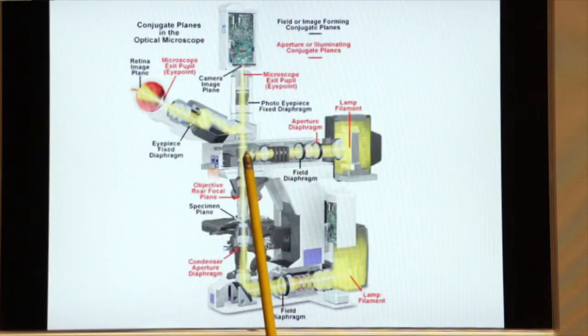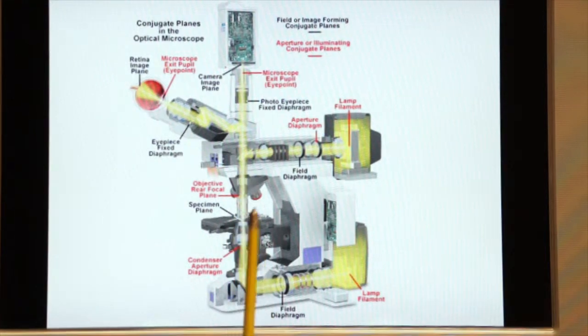So the light travels through this excitation filter, reflects off of a mirror, and is sent down through the objective to impact our specimen. So we're reflecting light off of our specimen.